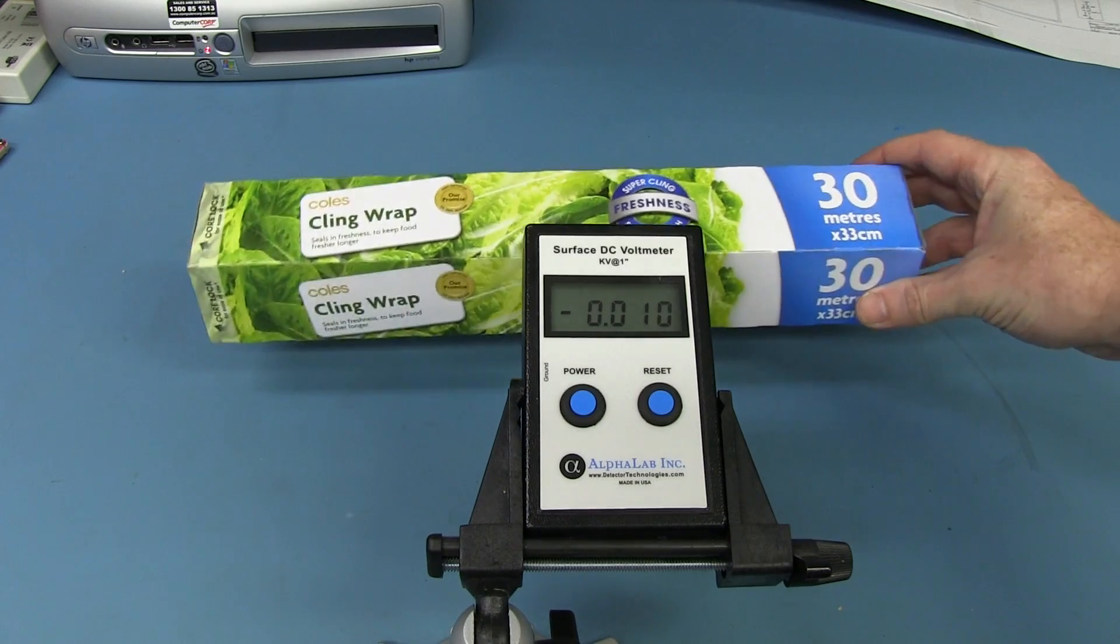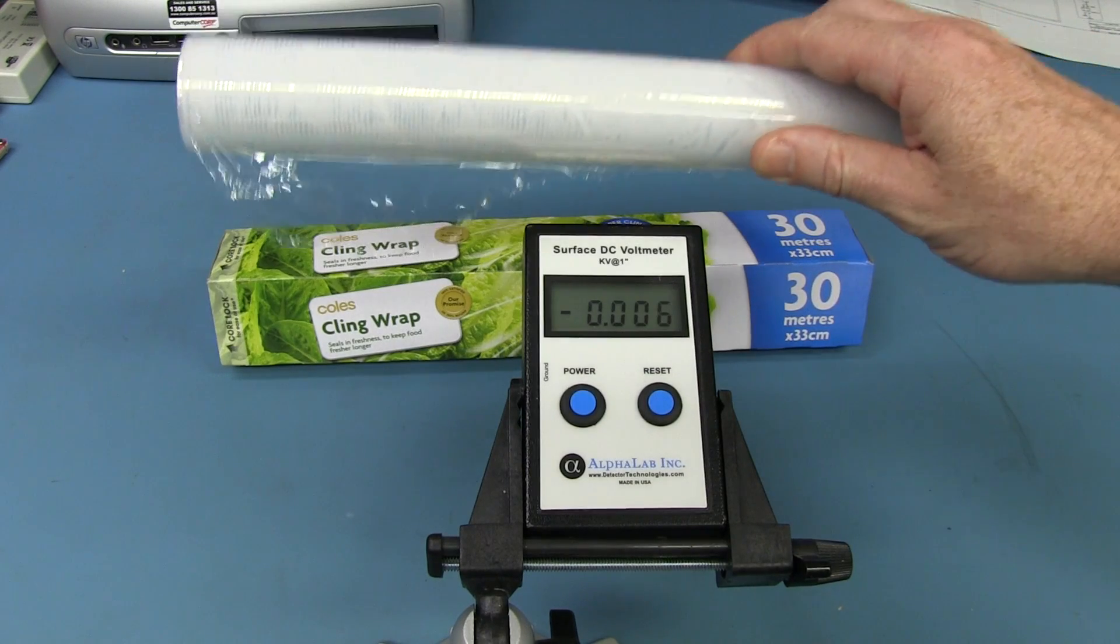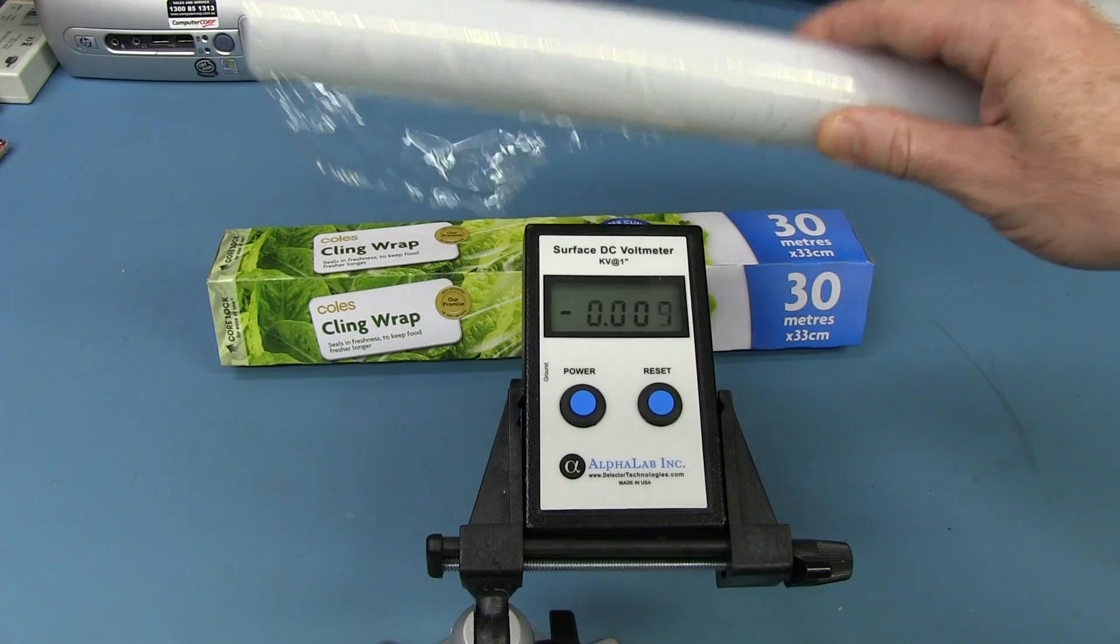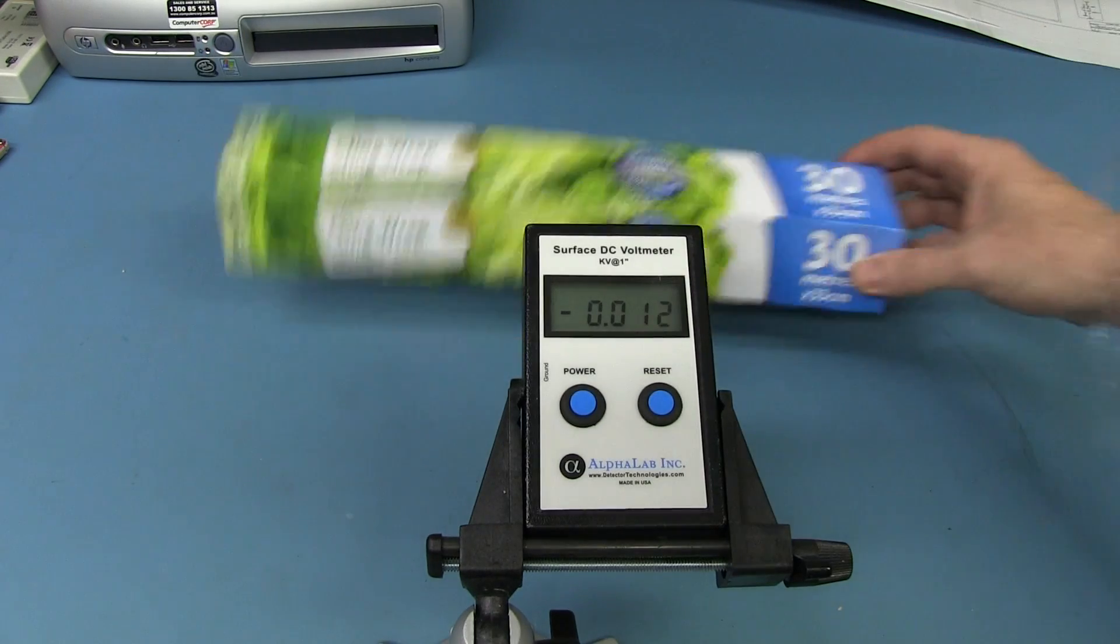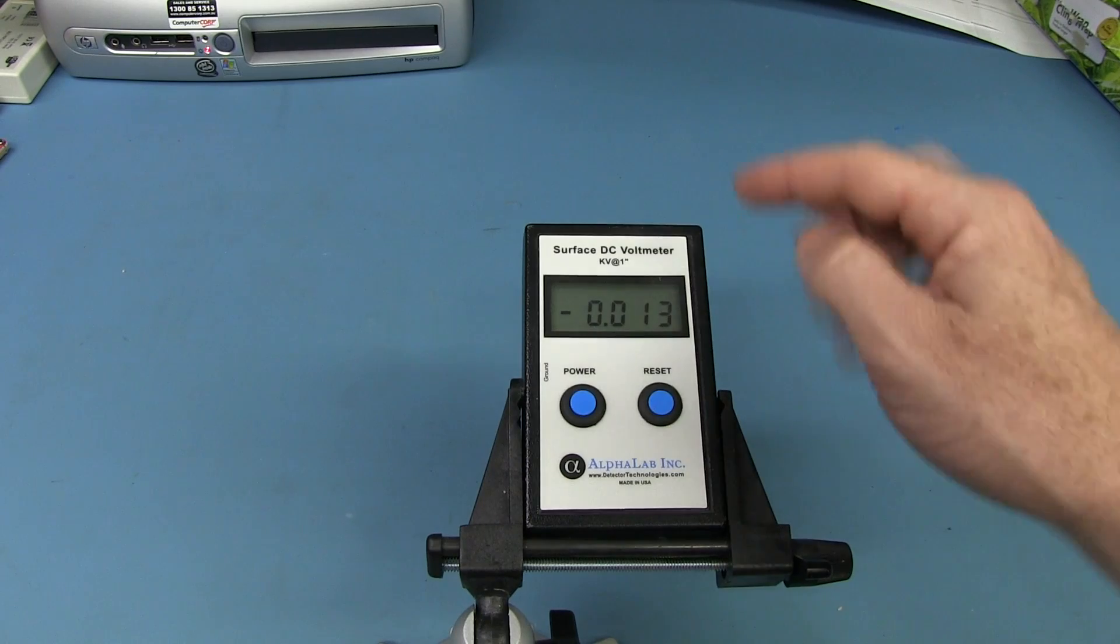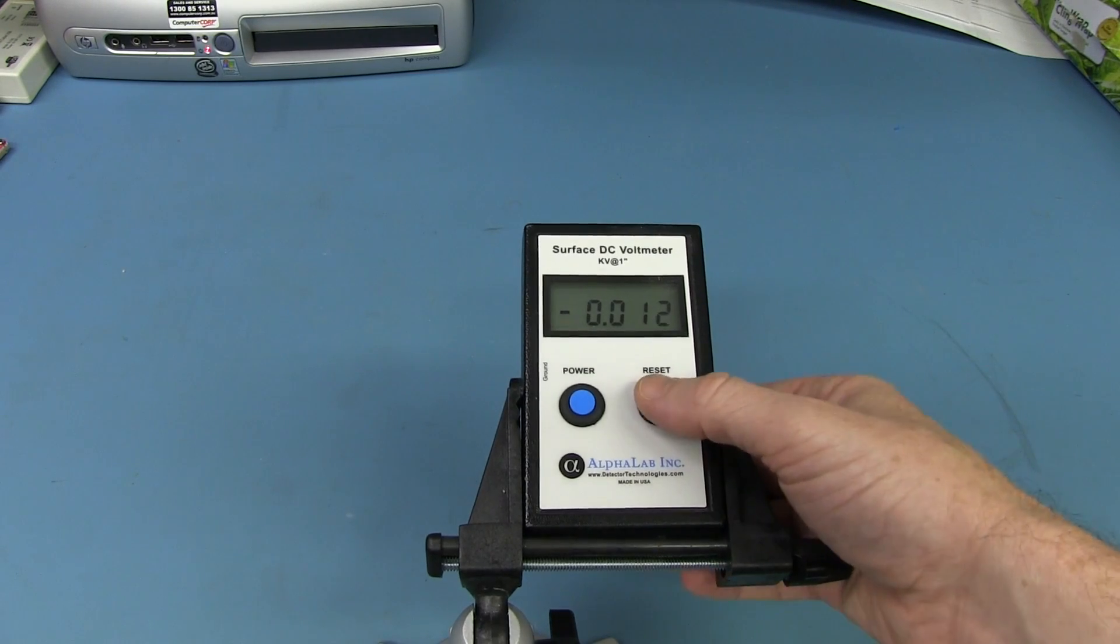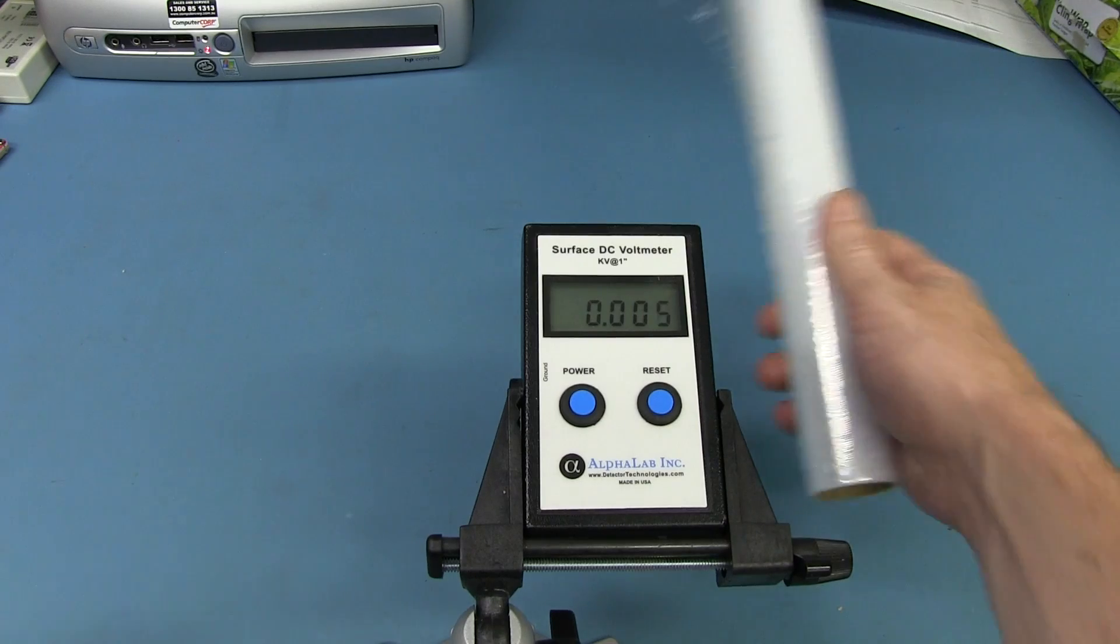This is just the Kohl's brand cling wrap. I have no idea what type of cling wrap it is. There are many different types. Apparently some of the older ones work on electrostatic buildup and charge. The newer ones have chemicals added to make them sticky. So not entirely sure what this one's made of. Anyway, generic Kohl's brand. I've got my surface DC voltmeter here, and this will tell me the charge in kilovolts at one inch. So I've got to try and keep the cling wrap one inch away from the sensor. It's going to be near enough. We're just looking at ballpark readings here. So I'll reset it, and here we go. I'll take the cling wrap off the roll.